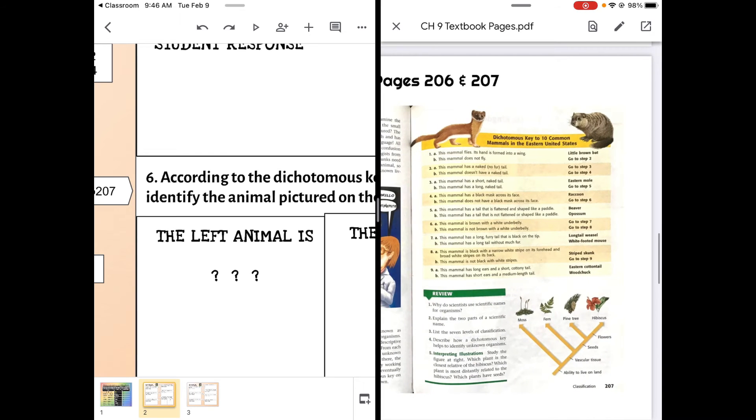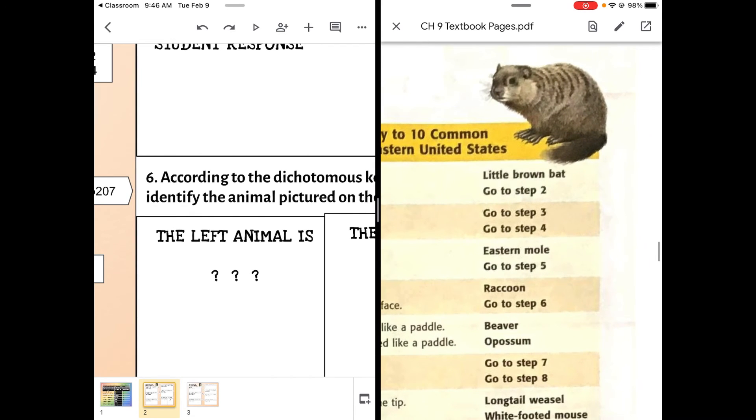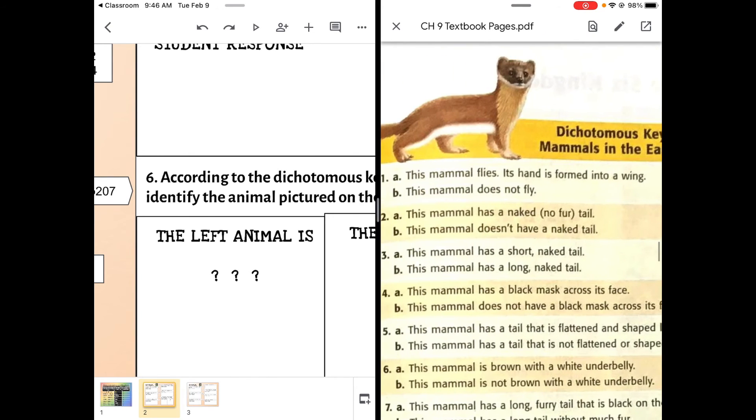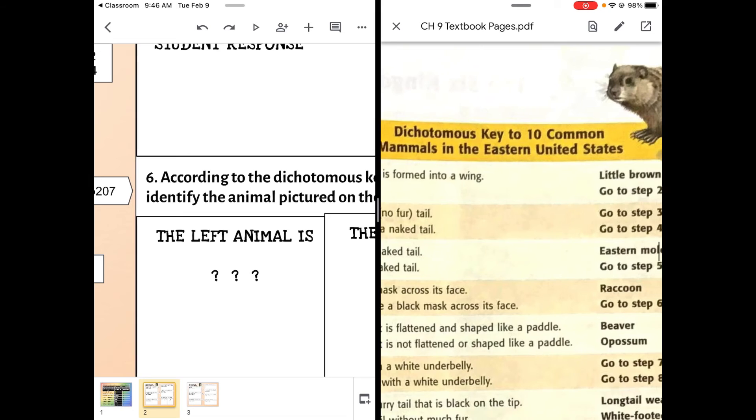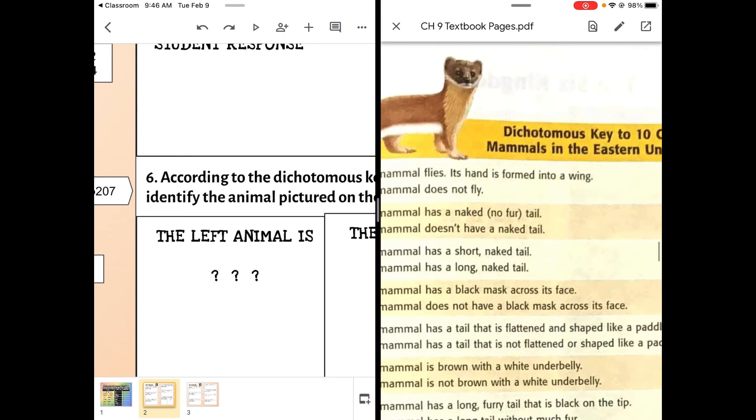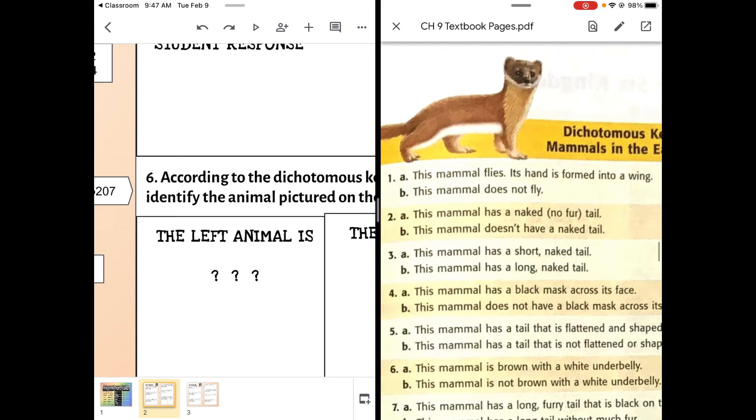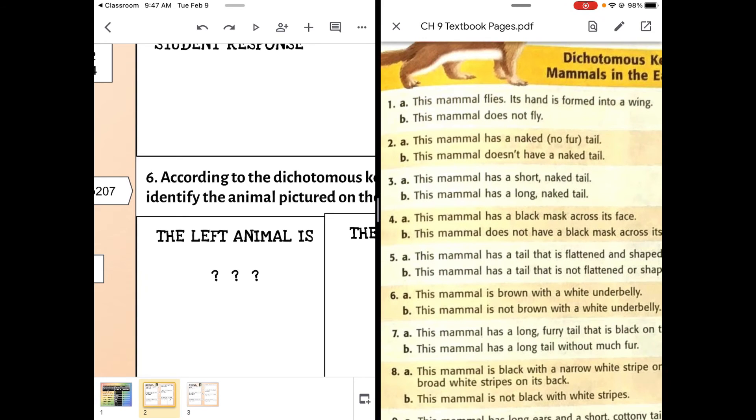To do the creature on the right, we have to go through the same steps. Are its hands formed into wings? No. Does it have a naked tail? No, it has a furry tail. Go to step four. Does it have a black mask across its face? No, it's not a raccoon. Go to step six. Is it brown with a white underbelly? No, no white underbelly.